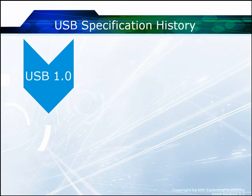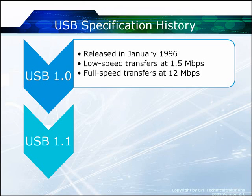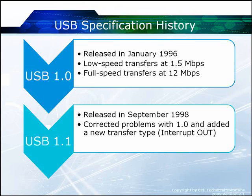Now let's look at the history of the spec. USB 1.0 was released in January of 1996. It had low-speed transfers at 1.5 megabits per second and full-speed transfers at 12 megabits per second. USB 1.1 was released in September of 1998. One of the big problems with 1.0 was there was no interrupt out — low-speed devices can only use a control and an interrupt endpoint — and that was corrected with 1.1.